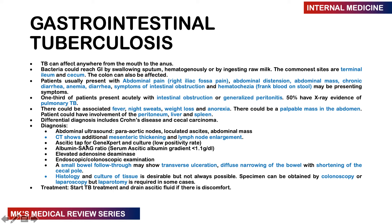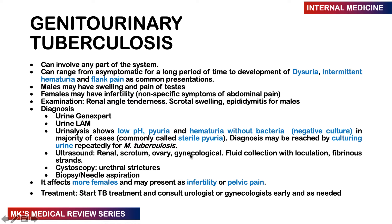Investigations for GI TB: abdominal ultrasound may show para-aortic nodes, loculated ascites, or an abdominal mass. CT scan may show mesenteric thickening and lymph node enlargement. Ascitic tap for GeneXpert and culture has low positivity. SAAG (serum-ascites albumin gradient) less than 1.1 g/dL is suggestive of TB. Elevated adenosine deaminase is also helpful. Endoscopic and colonoscopic studies can be done; small bowel follow-through shows transverse ulceration, diffuse narrowing, and shortening of the cecal pole. Start patients on TB treatment and drain ascitic fluid for symptomatic relief.